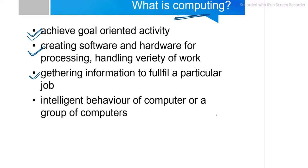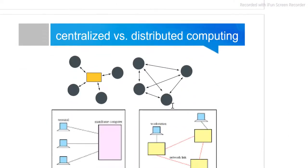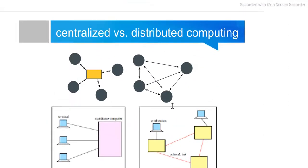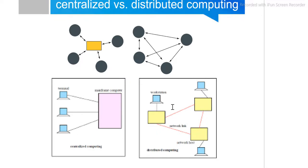Besides that, when more than one system is connected to behave in an intelligent way and generate a feasible output, we can say that system is doing computational work. So these are some basic definitions of what computing means. After that we will discuss centralized computing and distributed computing.